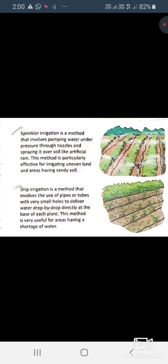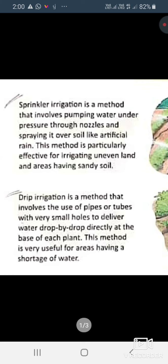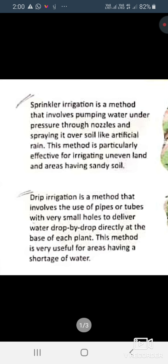Now let us discuss each of them one by one. First is sprinkle irrigation and second is drip irrigation. Sprinkle irrigation is a type of method which involves the pumping of water under pressure through nozzles and in this the artificial rain is done for watering crops.